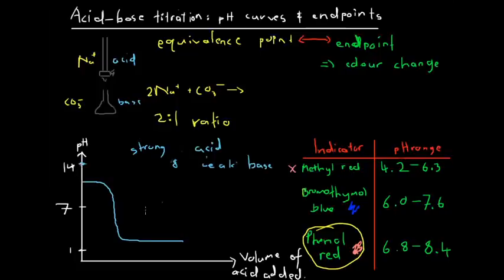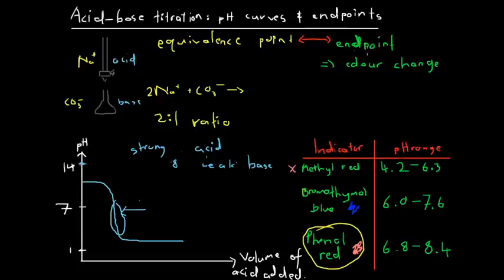Basically, when choosing an indicator to identify the end point of a titration — to ensure that the end point is close to the equivalence point — we're looking for an indicator that's going to change colour sharply around the equivalence point. There may be more than one option, but we choose the most appropriate. In this case, for a strong acid and weak base, the most appropriate is methyl red.